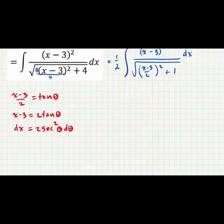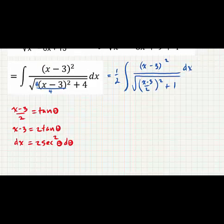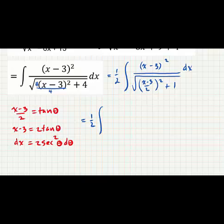And let's go ahead and substitute that into the integral. So we are going to have 1/2 integral. In the numerator, we have (x - 3)^2. Here's x - 3. And when we square that, we get 4 tan^2(θ). dx is equal to 2 sec^2(θ) dθ.